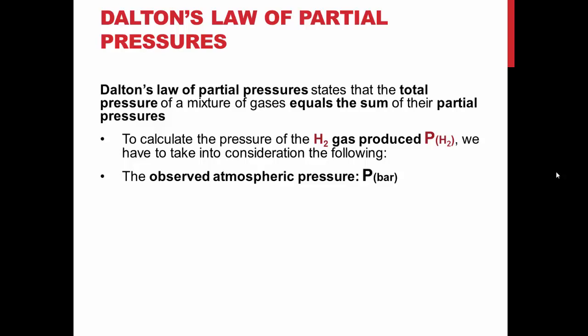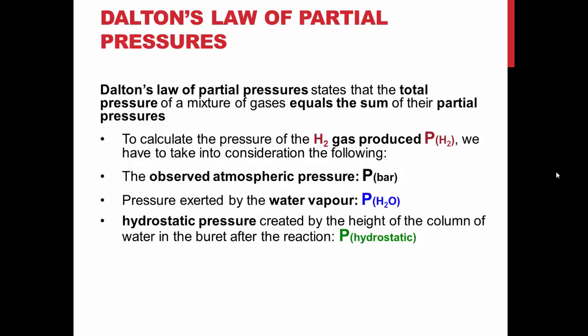P-bar, or atmospheric pressure, you know from reading the barometer. The partial pressure of water vapor can be looked up in the CRC handbook at the temperature of the water used in the experiment. The hydrostatic pressure can be found by measuring the height of the column of water in your burette above the beaker with a ruler. This measurement should be recorded in millimeters. This value can be converted to millimeters of mercury by dividing it by 13.6, which is the specific gravity of mercury.